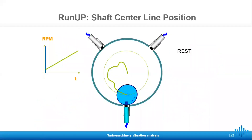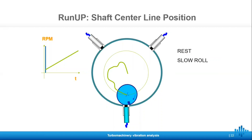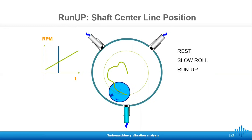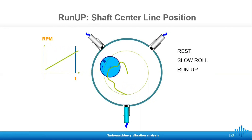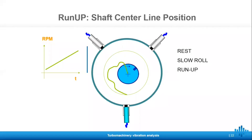Here we have one more animation to show how the shaft centerline position works. At rest, the shaft is sitting at the bottom of the bearing. As we begin the slow roll, it is still sitting at the bottom of the bearing while spinning. As the run-up begins, the shaft speeds up and moves about the bearing within the clearance circle until it settles at its operating position.